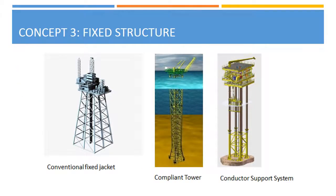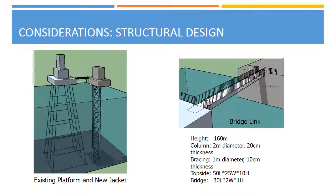Fixed structure concept. Our third proposal is to construct a new jacket. We looked at the types commonly used in the industry: the conventional fixed jacket, the compliant tower, and the conductor support system. By comparing the pros and cons of these, we came up with a satellite triangular jacket, which is suitable for our intermediate water depth of 136 meters. The new jacket will be 160 meters high to match the level of the Albion platform. Bracings will be provided to resist fluid loadings. A double-decker truss bridge will connect both jackets to allow pipeline connections and personnel access for maintenance.